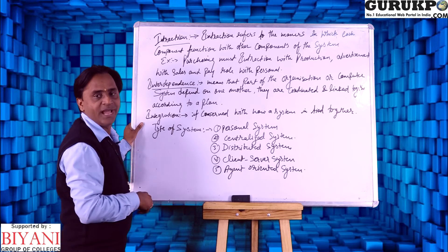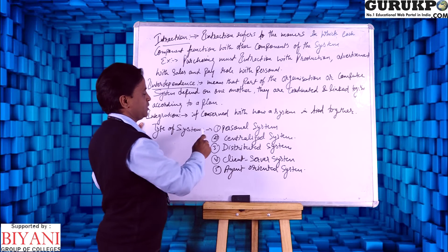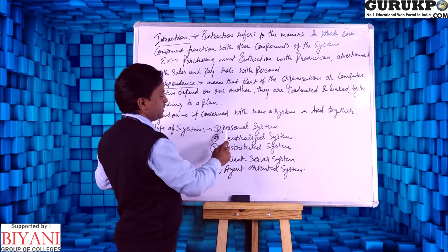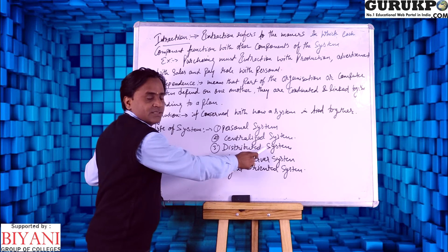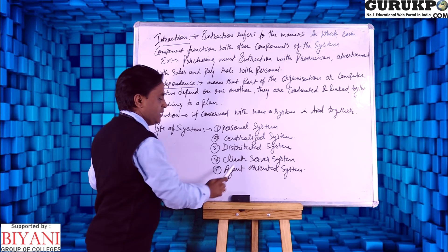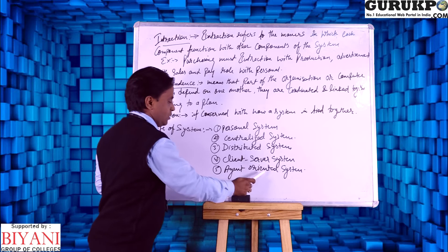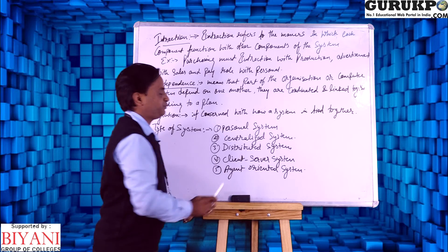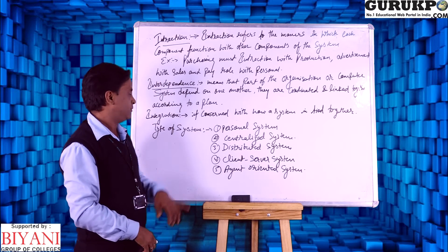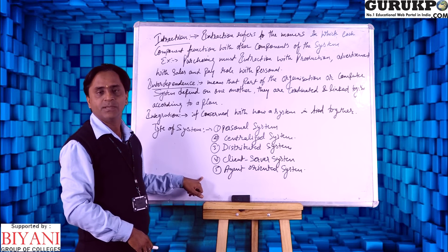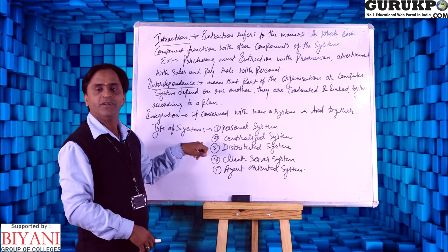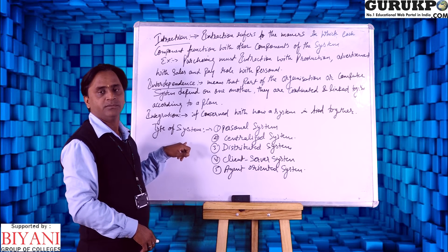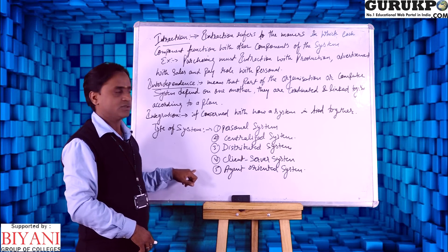Now we have to discuss the types of system. We will discuss personal system, centralized system, distributed system, client-server system, and agent-oriented system — there are five types of system, and we will see how each system works.